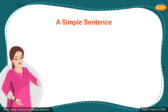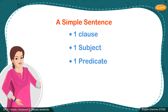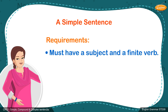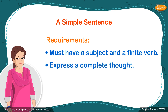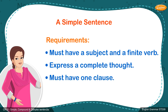Simple sentences. It consists of only one clause, with a subject and predicate. The requirements of a simple sentence are: 1. It must have a subject and a finite verb. 2. It expresses a complete thought. 3. It must have one clause. 4. It must have tense.